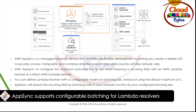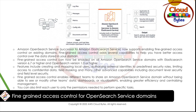Moving on to the next news. Fine-grained access control for OpenSearch service domains. The OpenSearch project is a community-driven open source fork of Elasticsearch and Kibana. Amazon OpenSearch service is a successor of Amazon Elasticsearch service. It now supports enabling fine-grained access control over existing domains. Fine-grained access control can now be enabled on all Amazon OpenSearch service domains with Elasticsearch version 6.7 or higher and OpenSearch version 1.0 or higher.